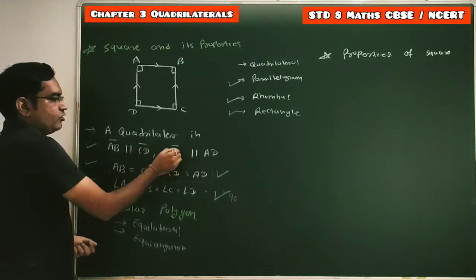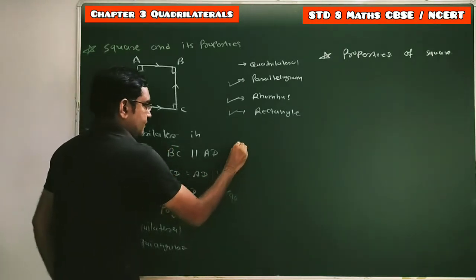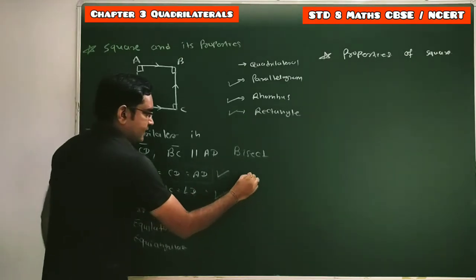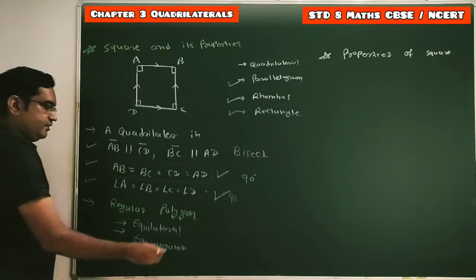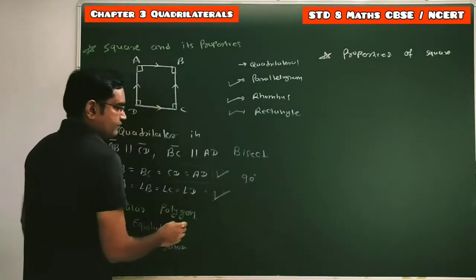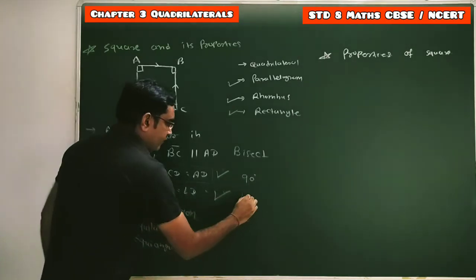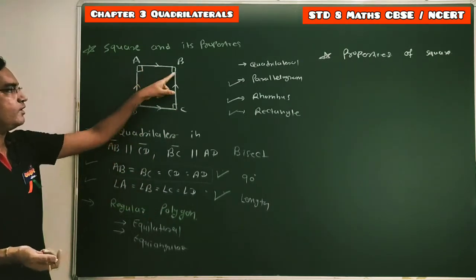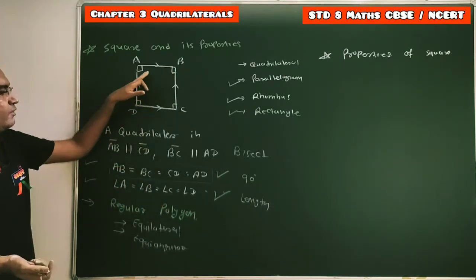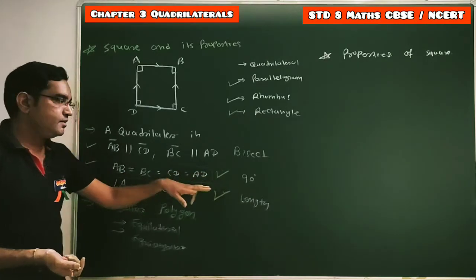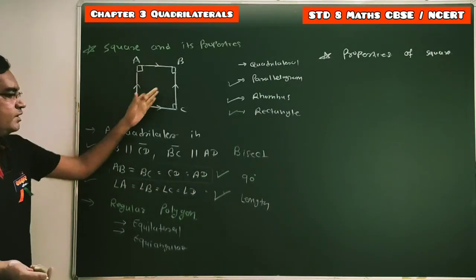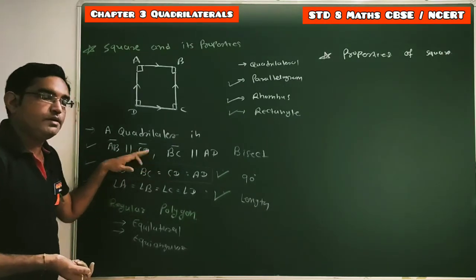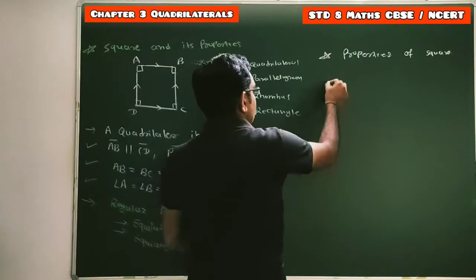Regarding diagonals: since it is a parallelogram, both opposite sides are parallel so diagonals bisect each other. Since all four sides are equal, diagonals bisect each other at 90 degrees. Since all four angles are equal, the length of the diagonals will be equal. So the diagonals bisect each other at 90 degrees — condition: four sides are equal. Diagonals bisect each other — condition: both pairs of opposite sides are parallel.